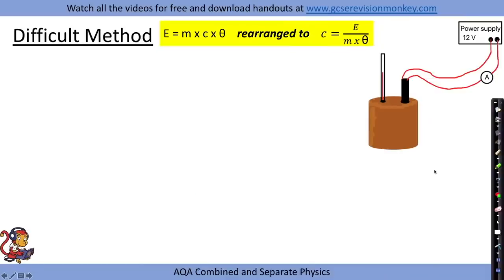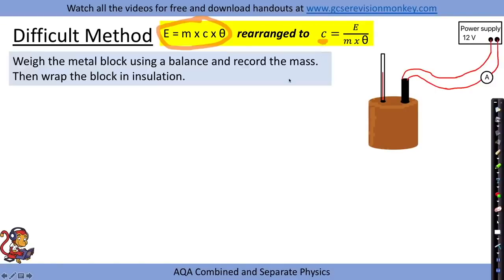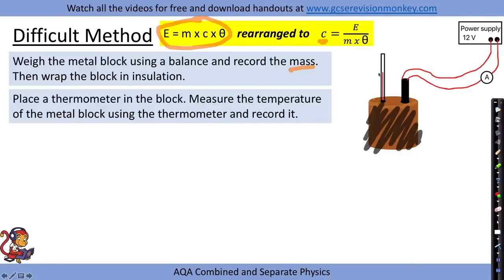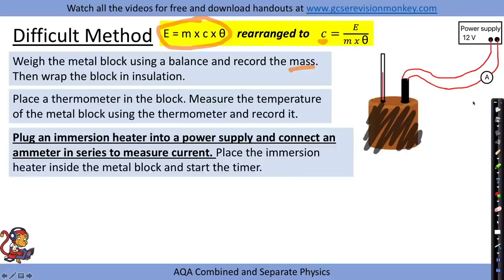We're still on the required practical for measuring the specific heat capacity of a material, but this method doesn't use a joule meter — though many of the steps are the same. We still use E = mcθ, rearranged to calculate specific heat capacity. We still weigh the metal block to record mass, wrap it in insulation to prevent heat transfer to the surroundings, and place a thermometer in the block to measure the initial temperature.